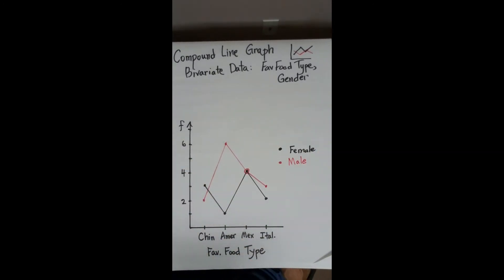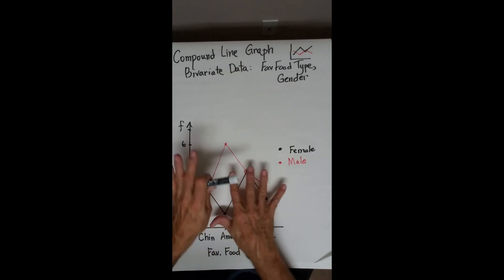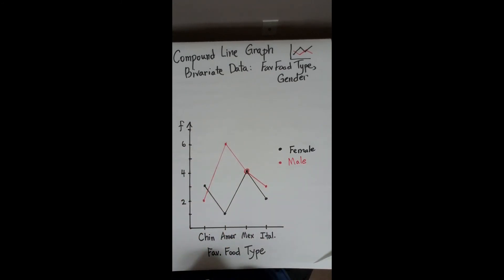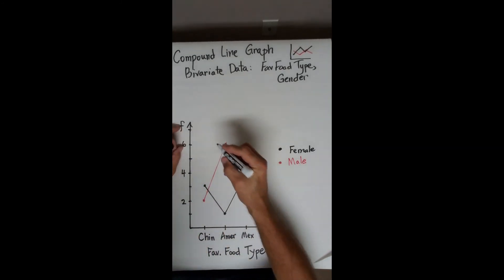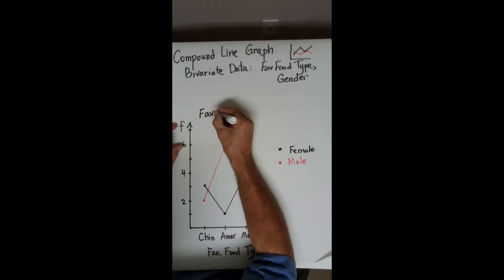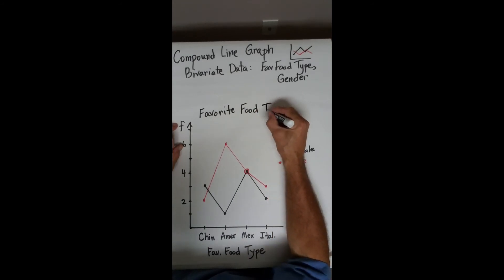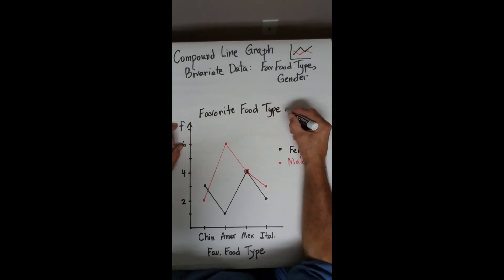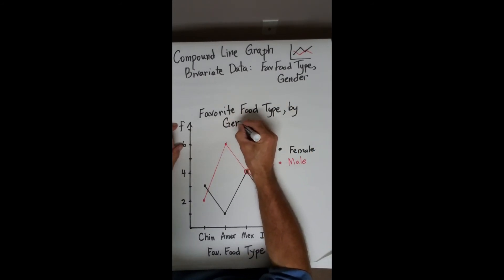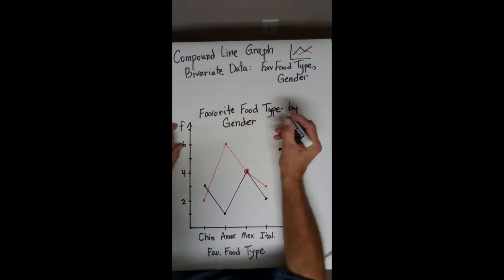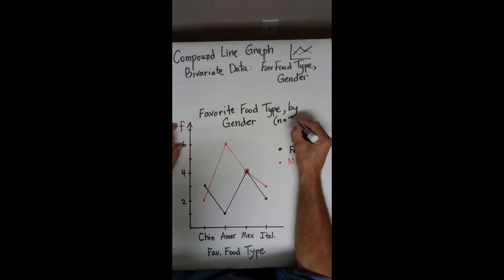What's left off of my graph? We've got labels, we've got scales, we've got the lines drawn, the dots, everything's neat, consistent, evenly spaced out. I need a title. Favorite food type by gender, N equals 25.